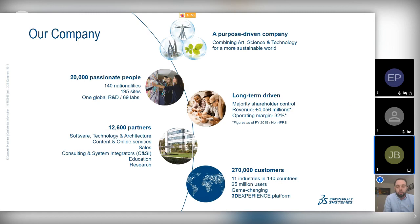Dassault Systèmes is the 3D Experience Company. This slide briefly explains what that means: we're a purpose-driven company, combining science and technology to try and create a more sustainable world for our customers and consumers. We have around 20,000 people across 140 nationalities across the globe, and a very strong research and development team connected globally across 69 laboratories, in addition to 195 DS offices.